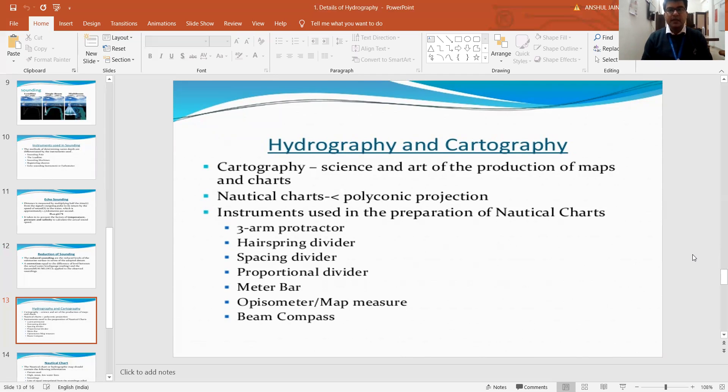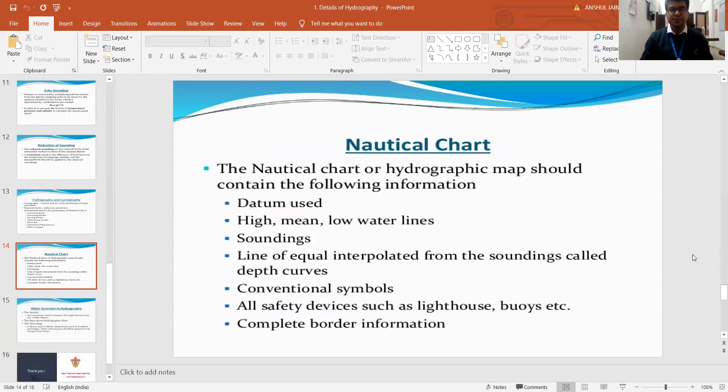The various instruments we utilize for preparing these nautical charts are: three arm protector, air spring divider, spacing divider, proportional dividers, meter bars, map measures, and beam compass. At least the names of these instruments should be clear that for preparing the maps or charts, whatever things we are using are known to us in terms of their technical names.